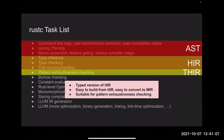The Typed HIR (THIR) is an intermediate step between HIR and MIR. The main thing that happens here is pattern exhaustiveness checking. It's mostly a stepping stone to the next representation — by this point most type checking is done (minus borrow checking), and THIR is designed to be easy to lower to MIR.